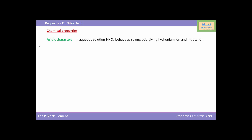First of all we will see the acidic character. In aqueous solution, HNO3 — that is nitric acid — behaves as a strong acid, giving hydronium ion and nitrate ion. It turns blue litmus to red. The reaction: HNO3 reacts with H2O to yield H3O+ (hydronium ion) and NO3- (nitrate ion).